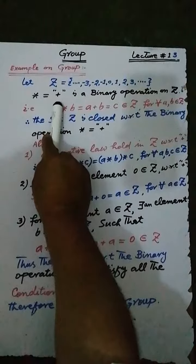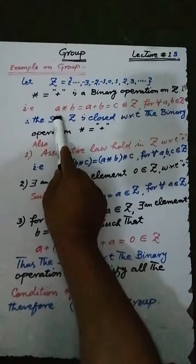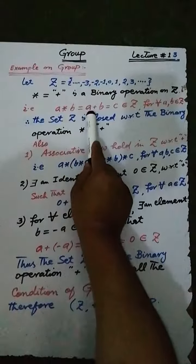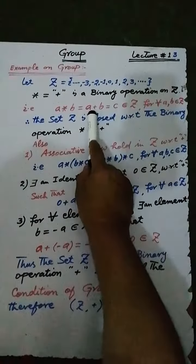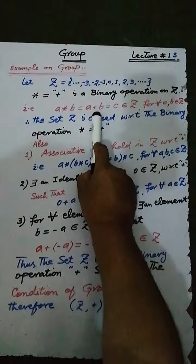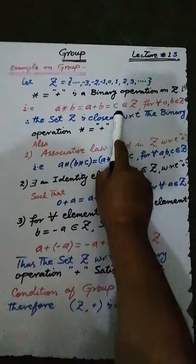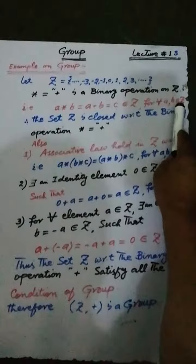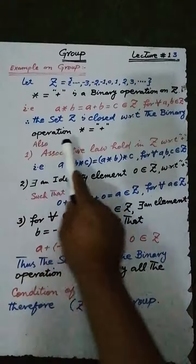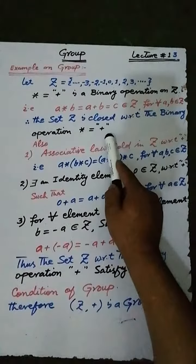Addition is a binary operation on the set z of integers. That is, for each a, a star b is equal to a plus b equals c, where a and b are any two integers. The result of the addition of any two integers must be an integer for each a, b belonging to z. Therefore, the set z is closed with respect to the binary operation addition.